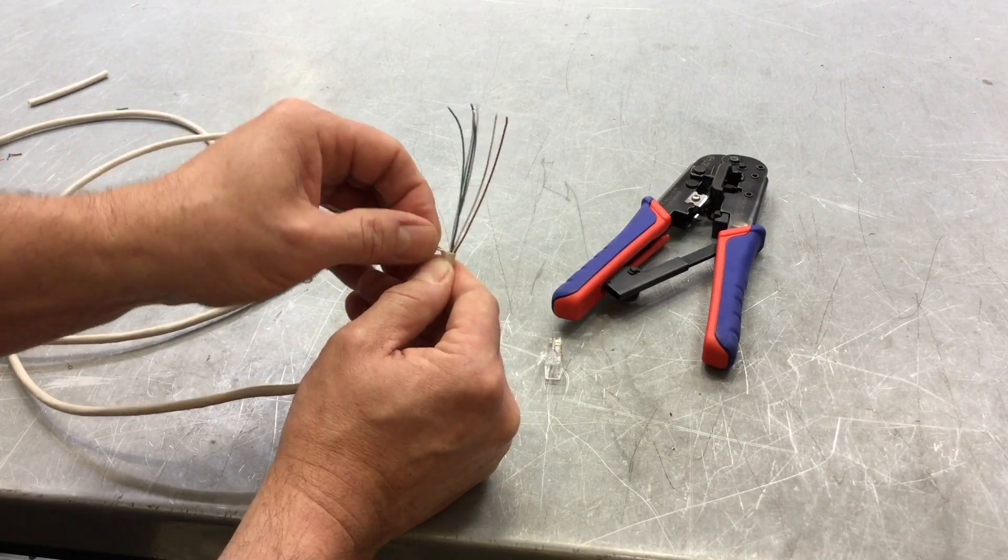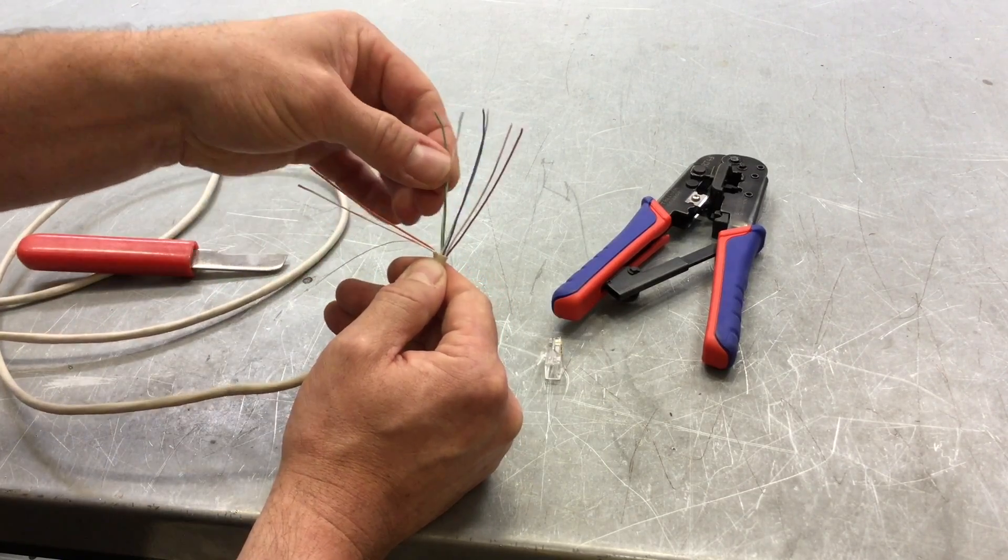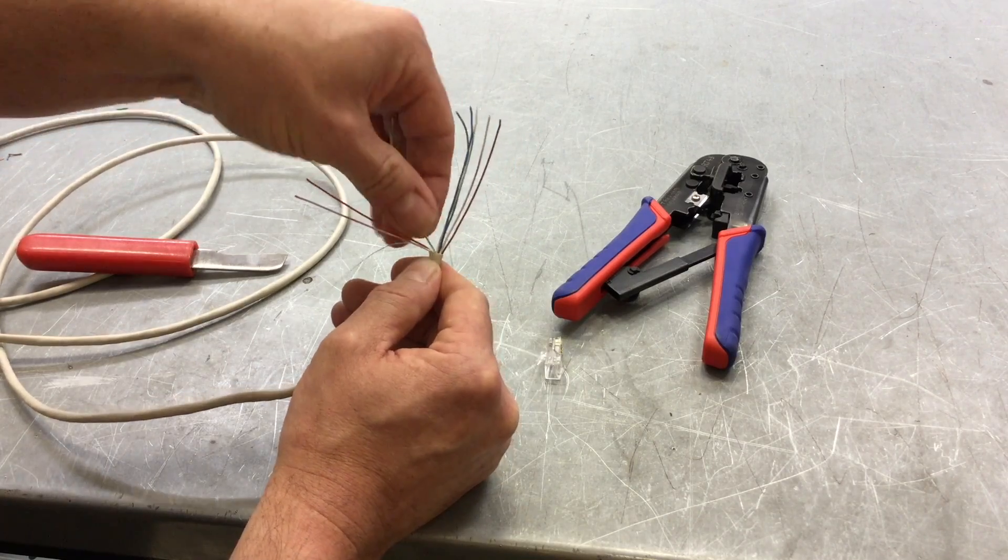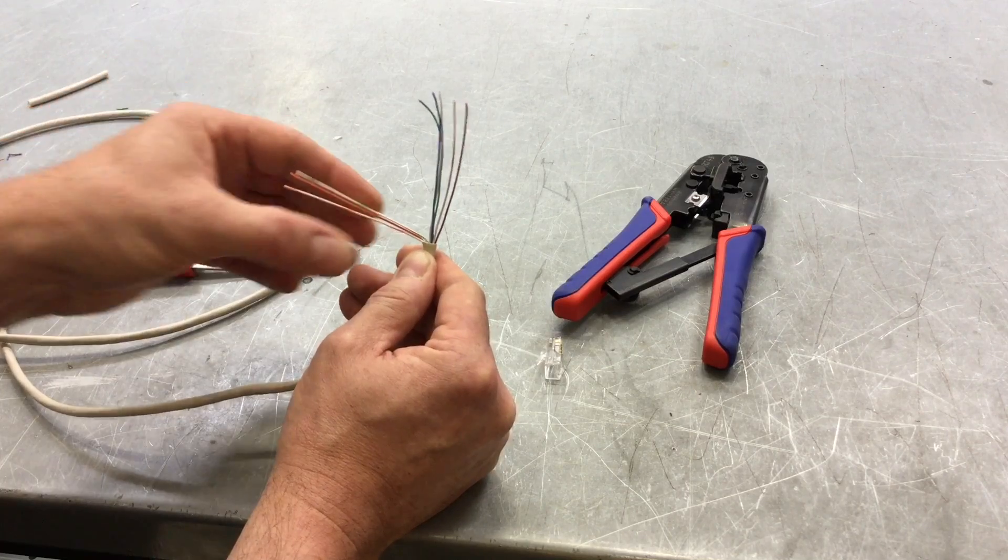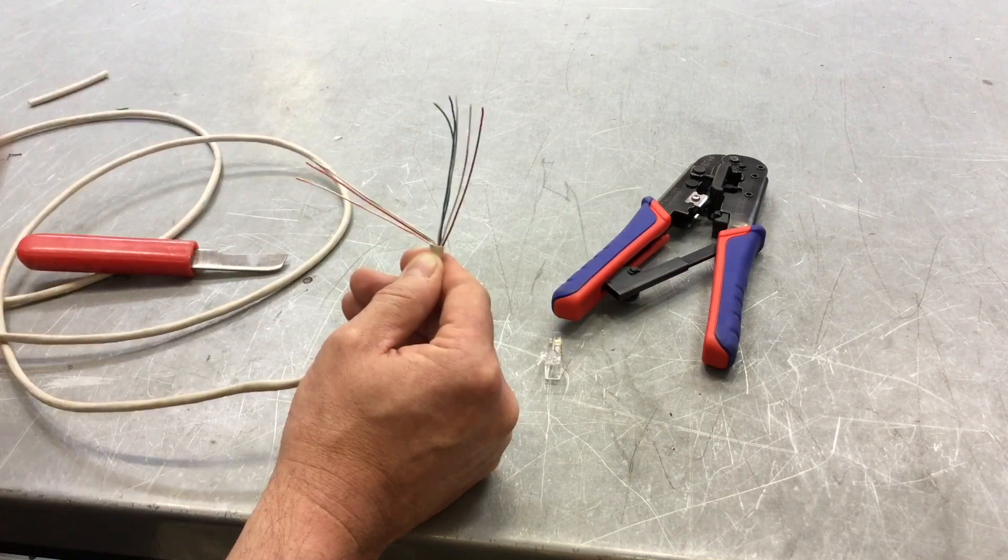And the next one is green and white. Very difficult to see but green and white, take it out. Pull it along the top, laying it on top of the three, so now I've got three laying on top of each other as we go.